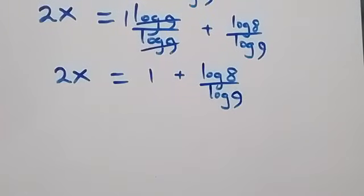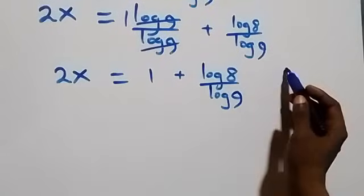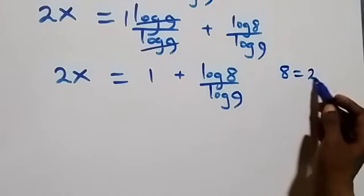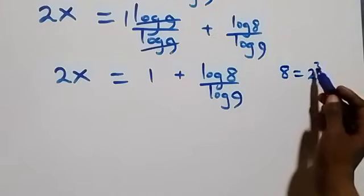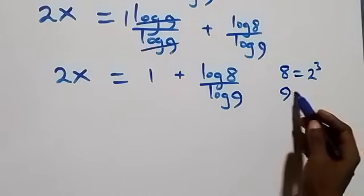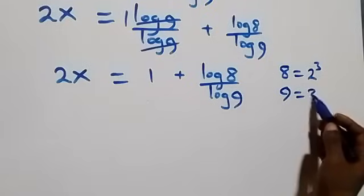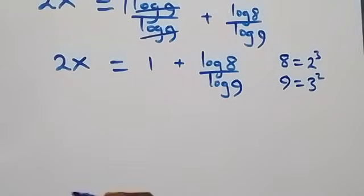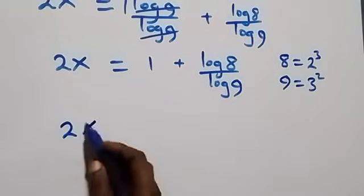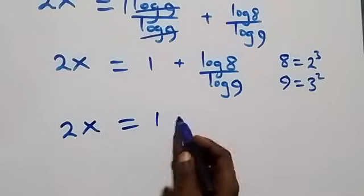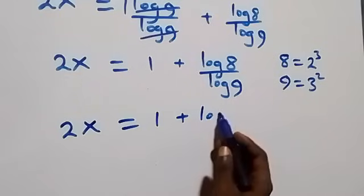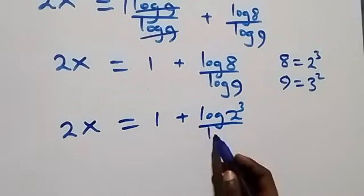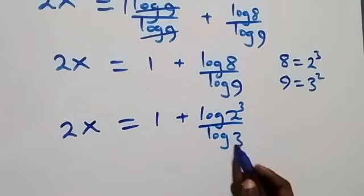Now we can express 8 as 2 times 2 times 2, which is 2 raised to power 3, and 9 as 3 times 3, which is 3 squared. So what we have becomes 2x equals 1 plus log of 2 raised to power 3, over log of 3 squared.